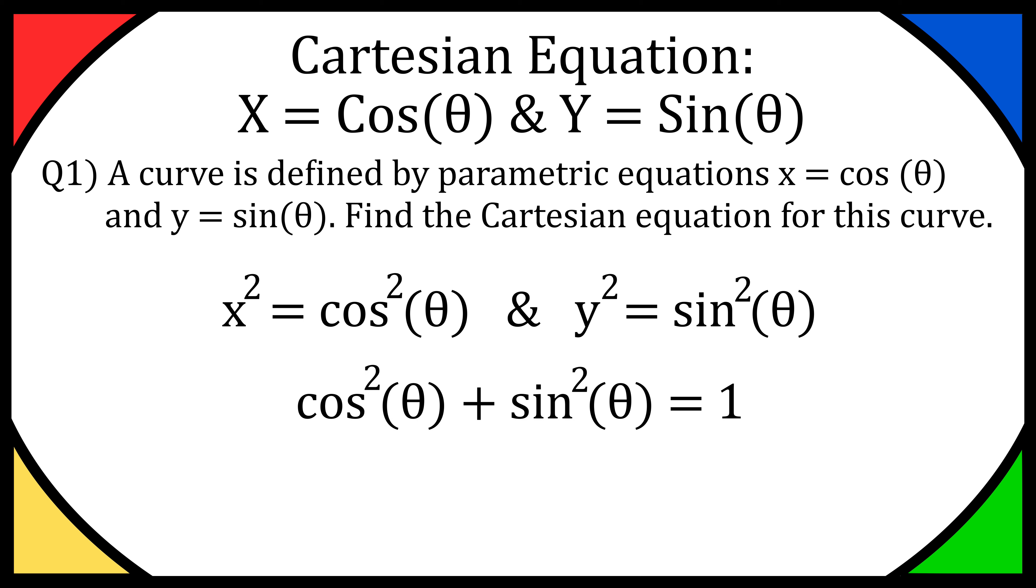We can use the fact that cos squared theta plus sine squared theta equals one, and then that's going to give us x squared plus y squared equals one. So we've got it in the form of just x and y.